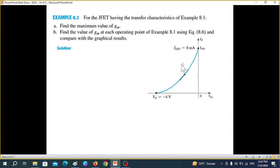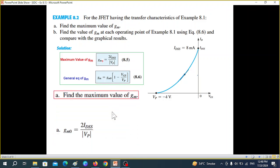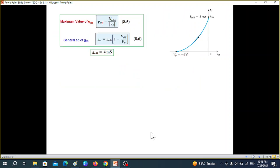This was the circuit. This was the graph transfer characteristics curve. And these were the two equations that we derived. So maximum GM will write this formula. And from the circuit, IDSS was 8 milli and VP is minus 4. So take magnitude of that. So GM0 is 4 milli Siemens.